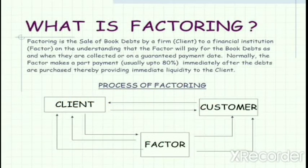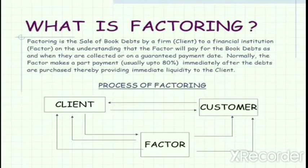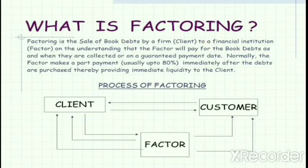Factoring is a sale of book debts by a firm — who is the client — to a financial institution called a factor, on the understanding that the factor will pay for the book debts as and when they are collected or on a guaranteed payment date. Normally, the factor makes a part payment, usually up to 80%, immediately after the debts are purchased, thereby providing immediate liquidity to the client. Factoring is defined as an asset-based means of financing by which the factor buys up the book debts of a company on a regular basis, paying cash down against receivables and then collecting the amount from the customers to whom the company has supplied goods. Thus factoring provides a firm with a source of financing its receivables and also eases the process of collecting them.